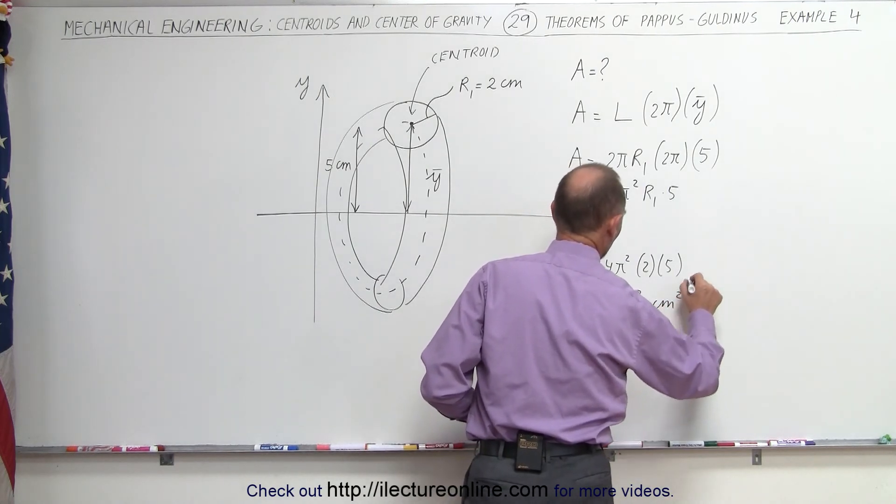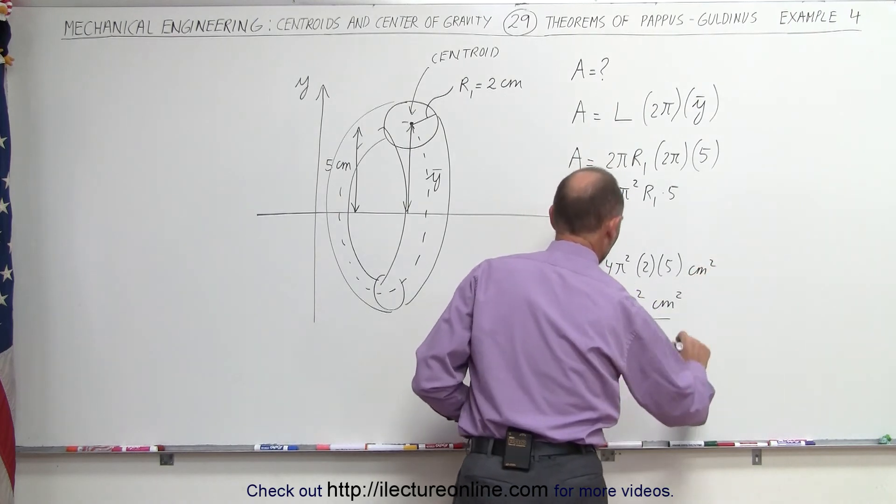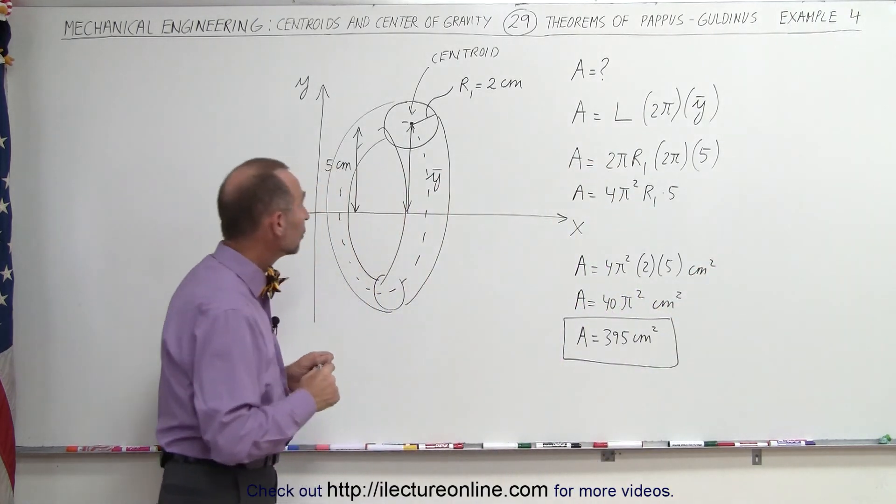Area equals 395 centimeters squared. This is, of course, centimeter squared. And that's the full answer. That's how we do that.